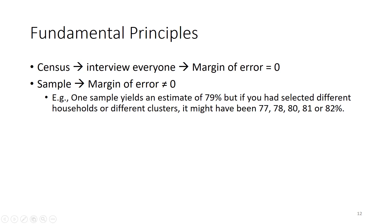But that's not how we do things. We do a sample, we do a survey based on a sample, and we have an estimate of the proportion who've been vaccinated. Let's say maybe that estimate is 79%. But if we had visited different households or different clusters, or even the same households and clusters on a different day, we might have obtained a different estimate. We might obtain a number like 77%, 78%, 80, 81, or 82%.